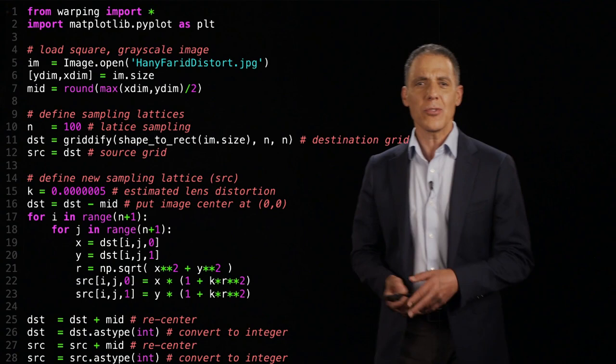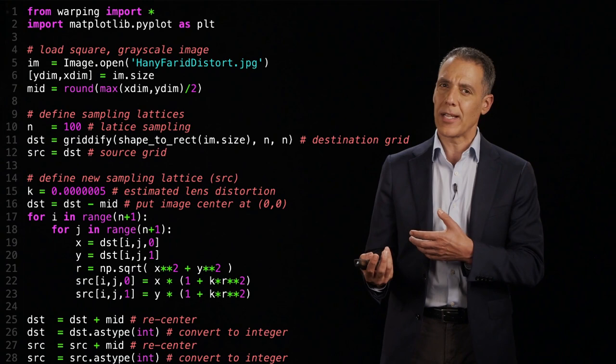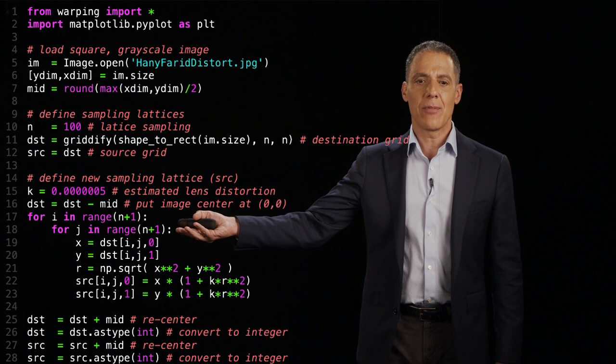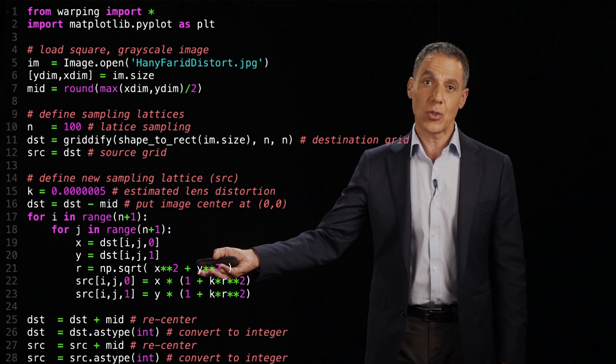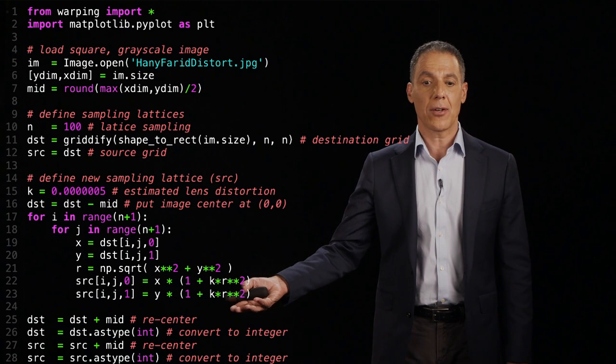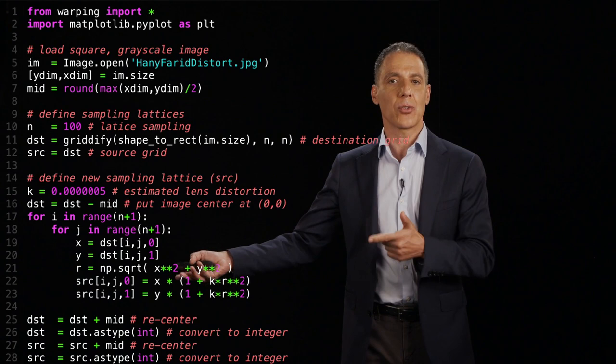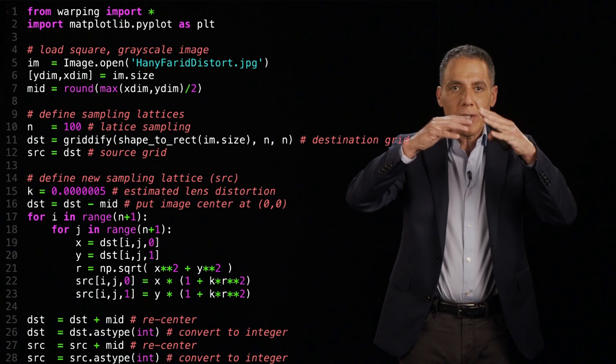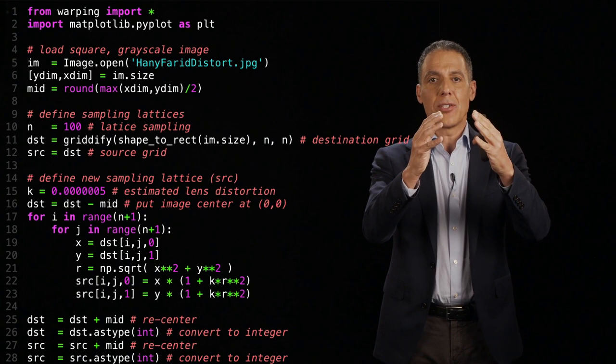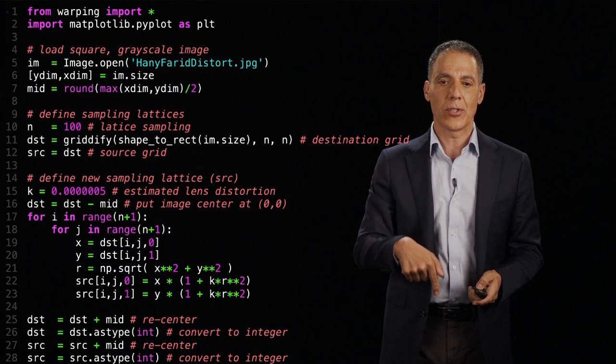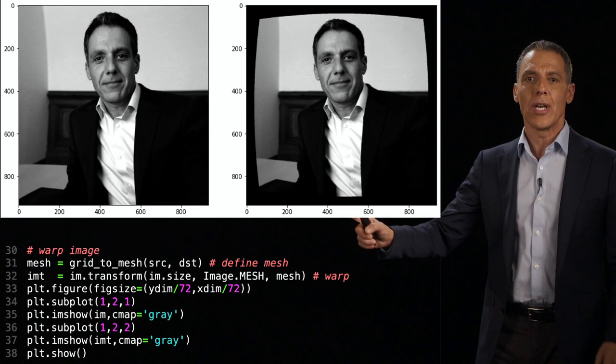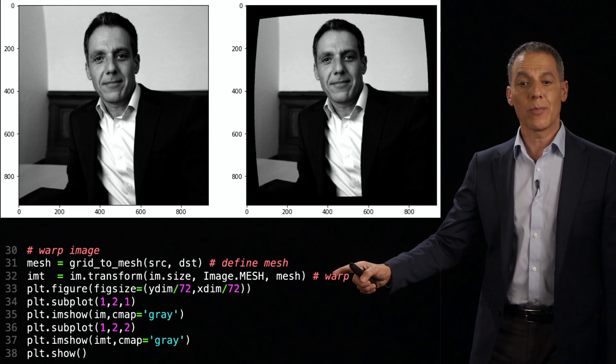All right, this one's a little bit trickier, not so much the code - you can see the code is actually relatively straightforward. But conceptually, what you're doing is you're now manipulating not the image pixels directly, but the coordinates of the image pixels. And so what I've done here is I'm going to grab the x and the y coordinate out of the destination. I'm going to compute r squared. So this is the square root of x squared plus y squared. And then I'm going to push it through the model. So the new, the source coordinate is equal to x times one plus kappa r squared. The y coordinate is equal to y times one plus kappa r squared. And so now the source data structure here is these distorted coordinates that correspond to the distorted image. And now what I want to do is move those back to the undistorted in the destination. And that's what the code below is going to do. We're going to do what's called the grid to mesh. We're going to do the image transform - that's the actual warping. And then I go ahead and do the display.